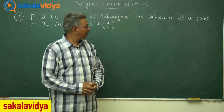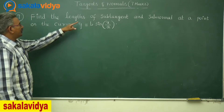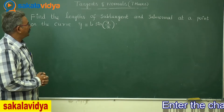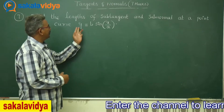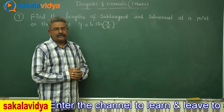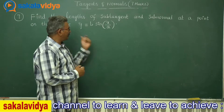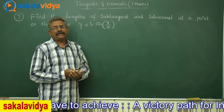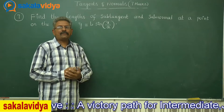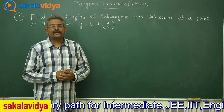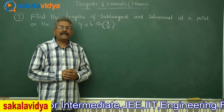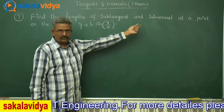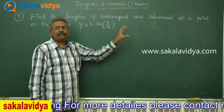Let us solve one more problem: find the lengths of subtangent and subnormal at a point on the curve y = b·sin(x/a). Here y is a function of x, so we can directly find dy/dx by differentiation. We differentiate both sides with respect to x. Having evaluated the slope m, we can find the length of the subtangent and subnormal using the formulae. This is the simple method to be adopted.